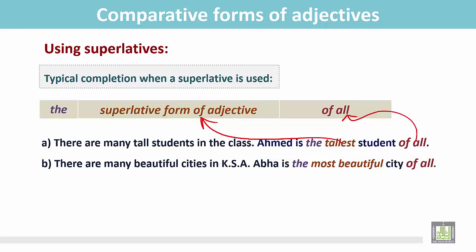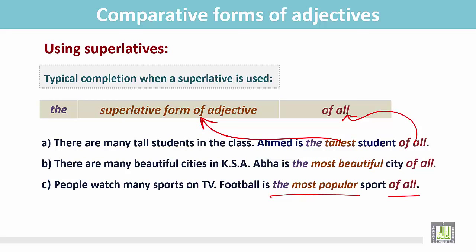There are many cities, but Abha is the most beautiful of all cities. People watch many sports on TV, like cricket, football, basketball. But football is the most popular of all, it means of all sports.